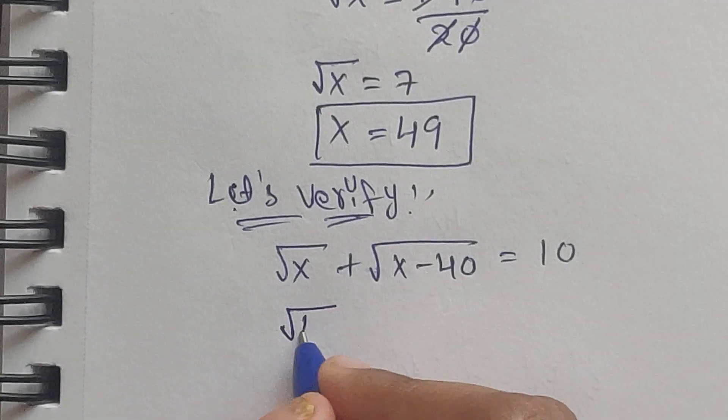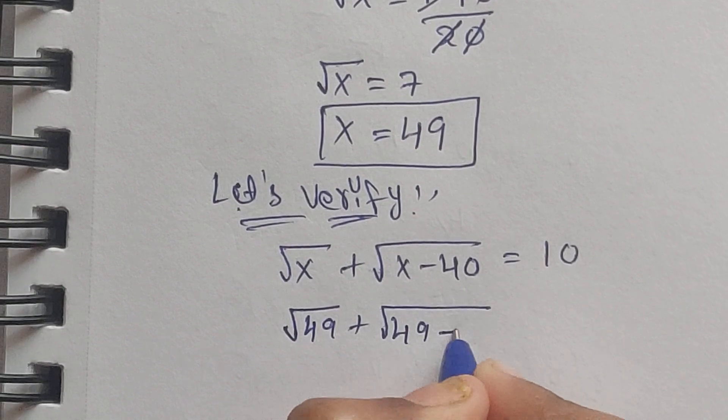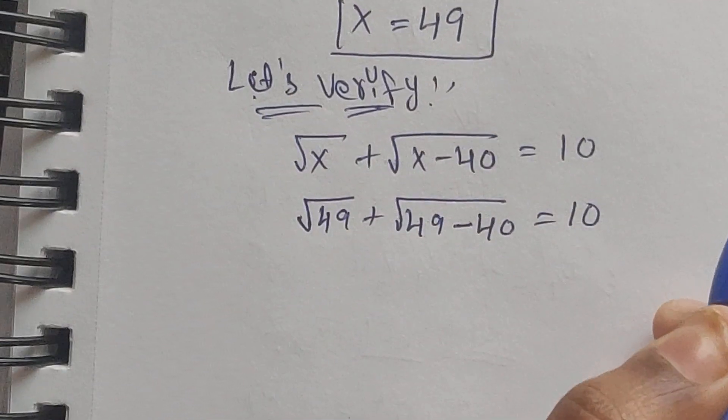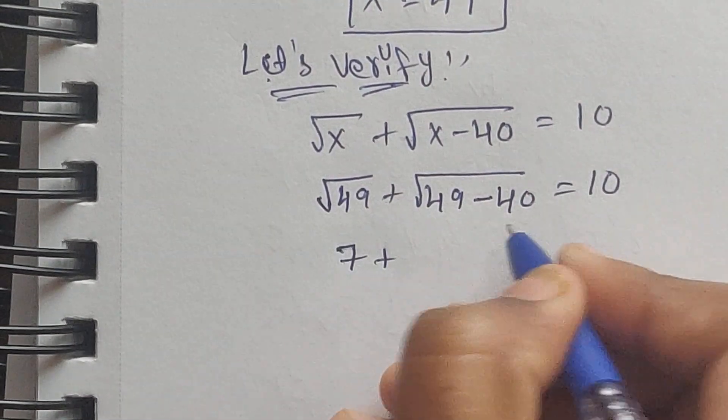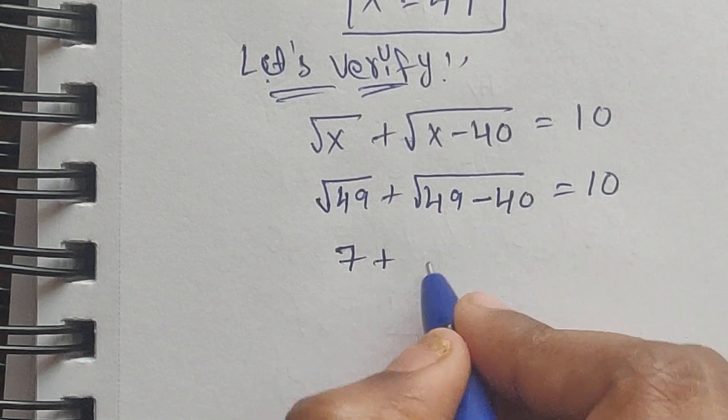Square root of x value 49 plus 49 minus 40 equal to 10. Square root of x plus 49 minus 40 which is equal to 10.